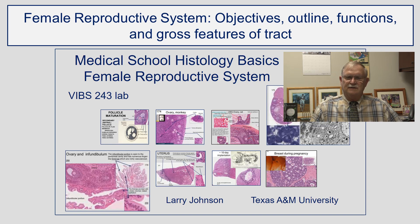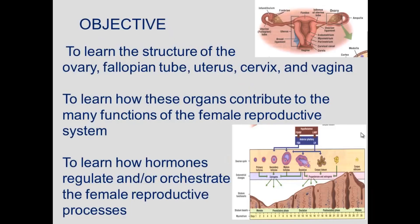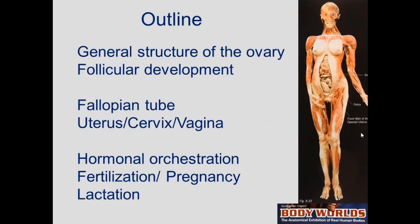In this portion we're talking about the objectives, the outline, the functions, and the gross features of the female reproductive tract. We want to learn the structures of the female reproductive system including the ovary, which is the gonad, fallopian tube, uterus, cervix, and vagina, and to learn how these organs contribute to the many functions of the female reproductive system. We also want to learn how hormones regulate and orchestrate the female reproductive process.